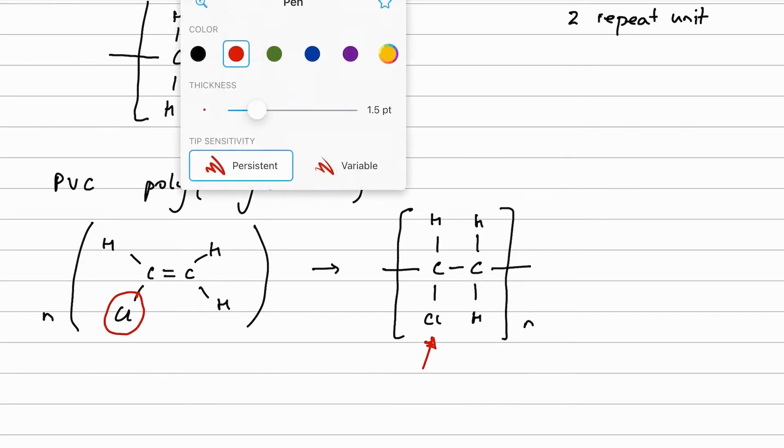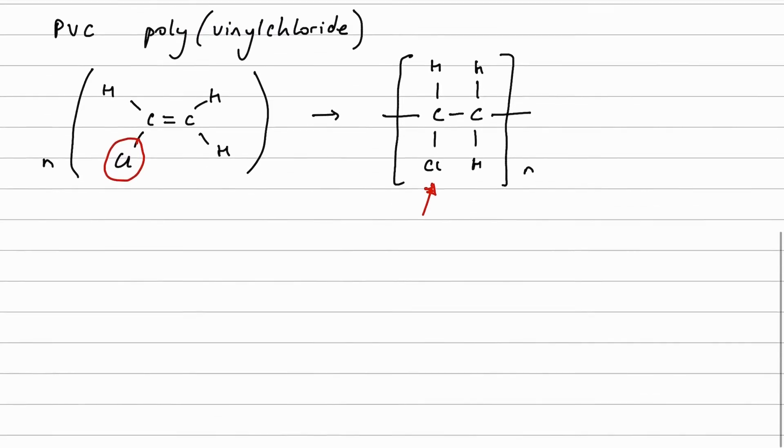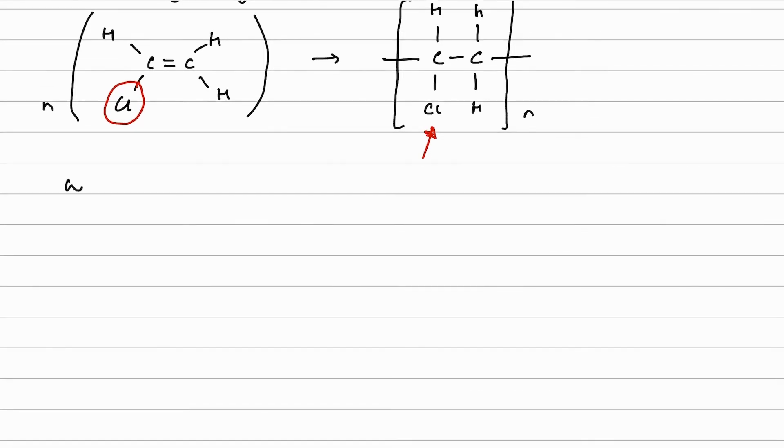Now, we can make polymers using more than one monomer. And that is called a copolymer.